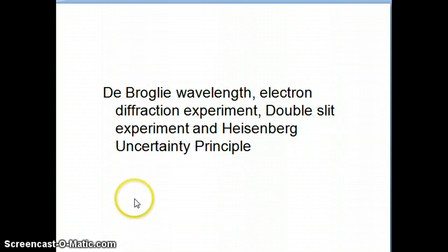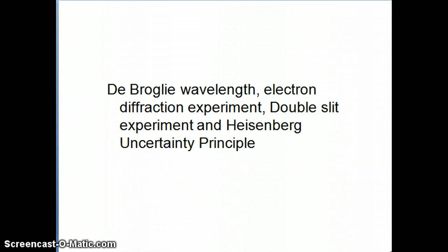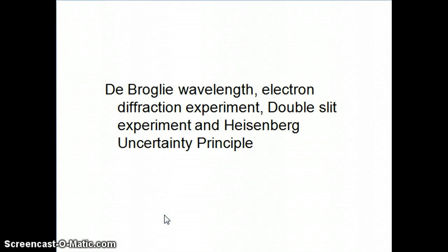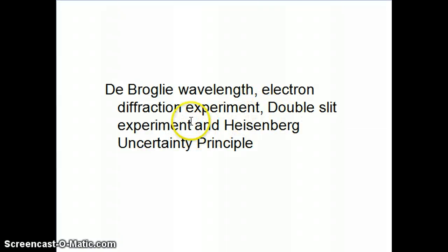Hi everyone. I'm going to continue discussing the last concept important for the development of quantum mechanics. This is the double slit experiment, and the principle that comes along with it is called the Heisenberg uncertainty principle.